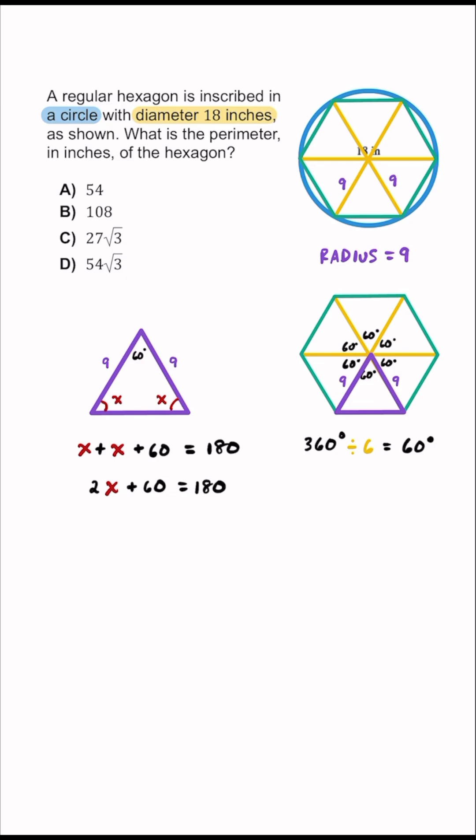Then if we go ahead and take away 60 from both sides, we know that 2x must equal 120 degrees, and if we divide both sides by 2, we know that x is going to be equal to 60 degrees.